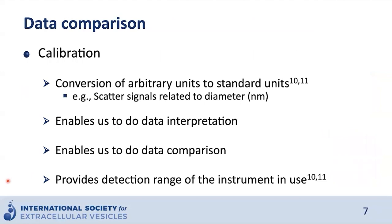One part of standardization is data comparison, and one tool to achieve data comparability is calibration. Calibration describes the process in which measured arbitrary units are related to standard units — for example, with flow cytometry, the scatter signal collected by the instrument is related to a diameter in nanometers. It's important to note that a calibration requires a traceably characterized reference material; simply running beads is not a calibration — you also need to apply this to your data.